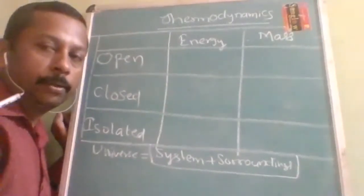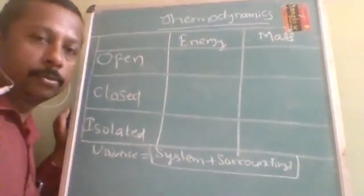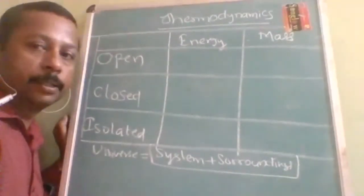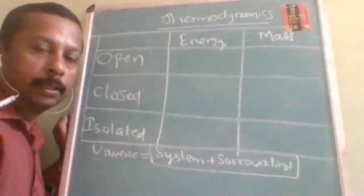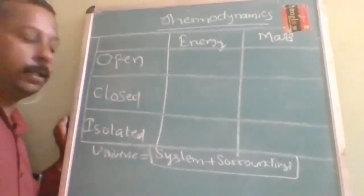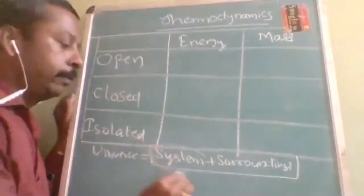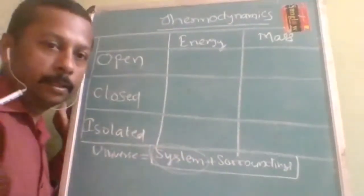For example, 'universe' — if you talk about the universe in social studies it is different, but here in thermodynamics it is completely different. So you should know the meaning behind the terms 'system,' 'surrounding,' and 'universe.' The part of the universe which is under observation is called a system.